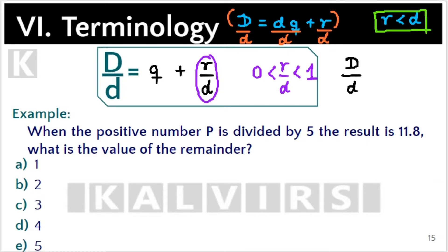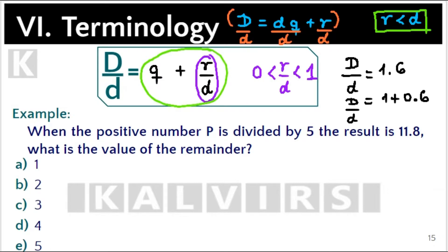For instance, if the dividend over the divisor is 1.6, we can rearrange this as 1 plus 0.6. According to this formula, the integer 1 is the quotient, and 0.6 — since it is between 0 and 1 — must be the remainder over the divisor.